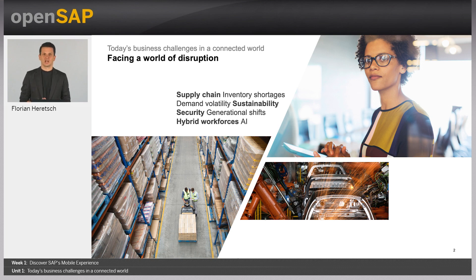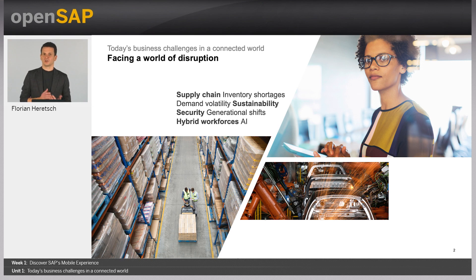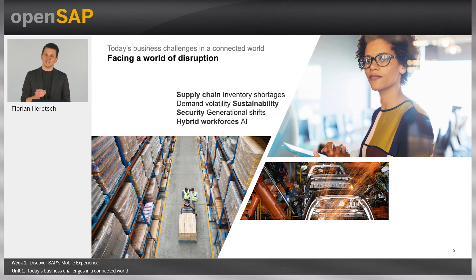Global supply chains are shaken by shortages of raw materials, components, and finished goods, as well as transportation delays and issues. Companies struggle to forecast demand and manage their inventory levels — particularly challenging for companies that rely on just-in-time inventory management. Planning and adjusting production and supply chain operations require more and more adaptive solutions that help companies act more flexibly and deliver instant results anywhere and at any time.